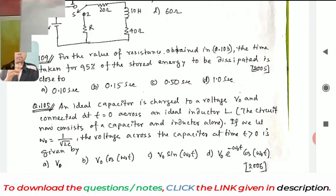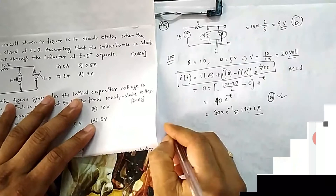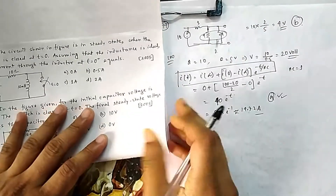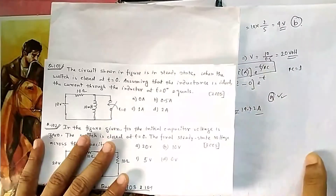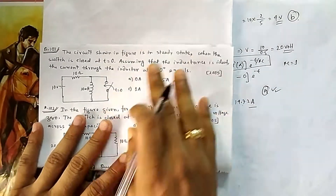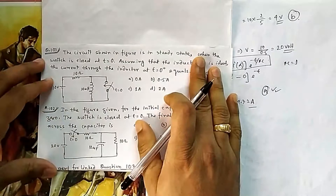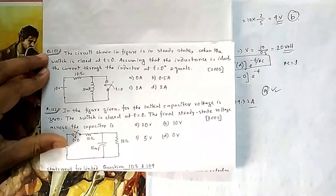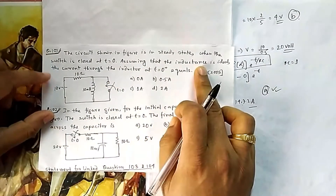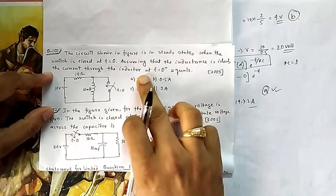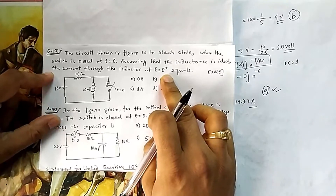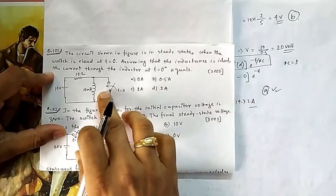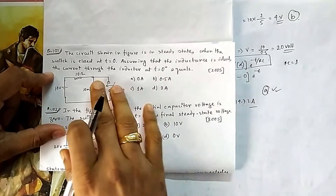For question 101, the circuit shown in the figure is in steady state. The switch S is closed at t equal to 0. Assuming the inductance is ideal, we need to find the current through the inductor at t equal to 0 plus.